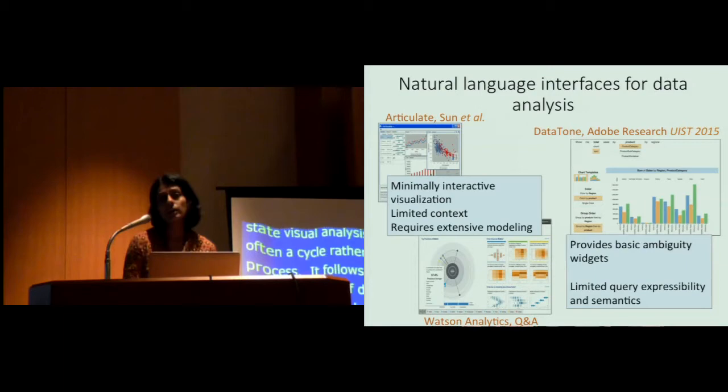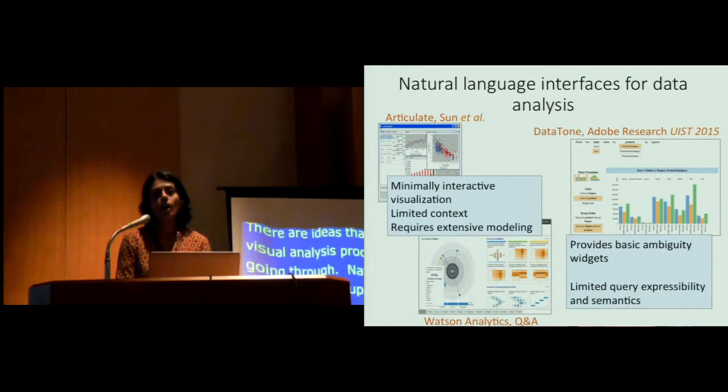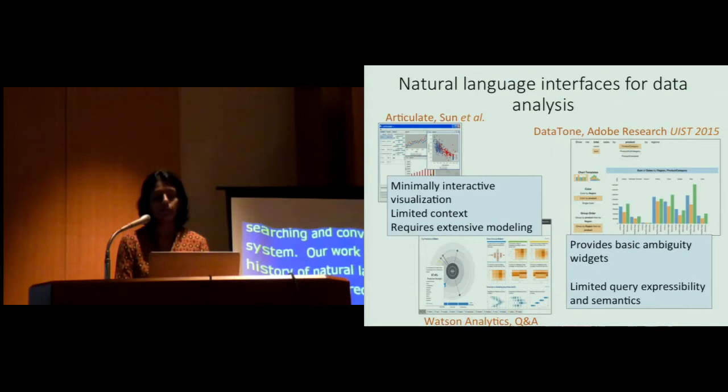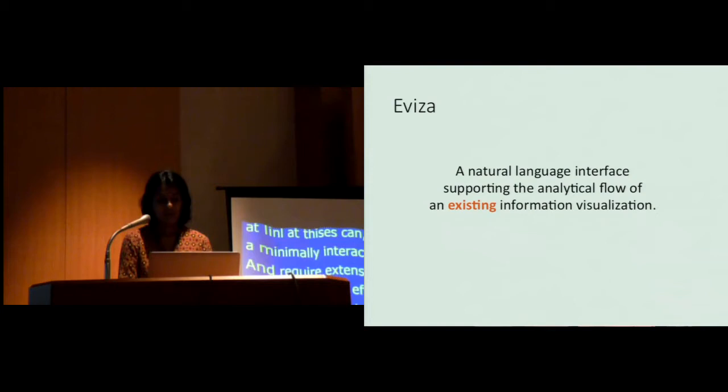Natural language has a long history of supporting querying, searching, and conversing with the system. Our work builds on a long history of natural language interfaces, particularly catered towards data analysis. Systems like Articulate, Watson Analytics, and Q&A often return a minimally interactive visualization in response to a user's utterance. Many of these systems start with a blank slate with limited context and require extensive modeling before the systems are effective. More recently, data tone, presented at VIS last year, also produces a visualization based on a user's query. However, the system improved the analysis flow by providing ambiguity widgets that the user can change if the system's guess is wrong. However, the query expressibility tends to be limited.